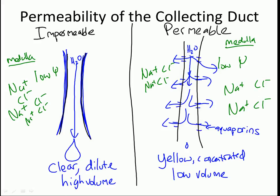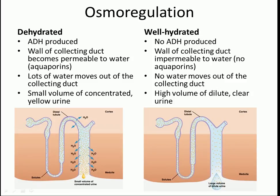To summarize: if you're dehydrated, ADH is produced, making the walls of the collecting duct permeable via aquaporins. Lots of water moves out of the collecting duct — back into the body and eventually the bloodstream — meaning only a small volume of concentrated yellow urine is released. A common student mistake is thinking lots of water moving out of the collecting duct means lots of urine, but it's the opposite. When hydrated, no ADH is produced, the duct is impermeable, and you get a high volume of dilute, clear urine.